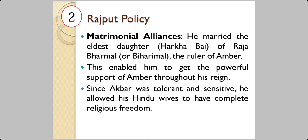That put a moral binding over Raja Barmal and over the other Rajputs who were in favour of Raja Barmal — not to fight with this Mughal king Akbar, because they had become equals now. This enabled him to get the powerful support of Ambar throughout his reign. Since Akbar was tolerant and sensitive, he had taken a Hindu girl to be his wife.